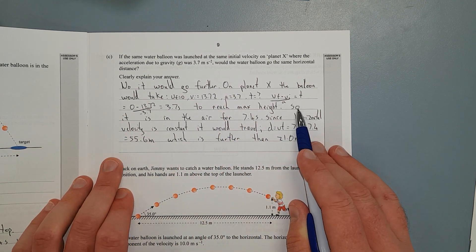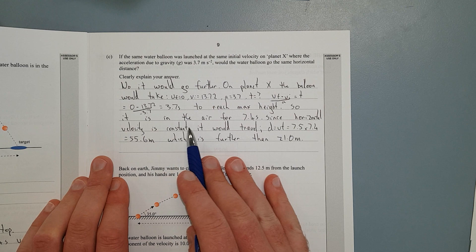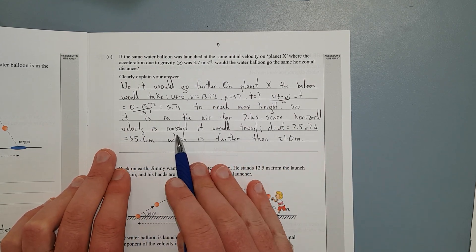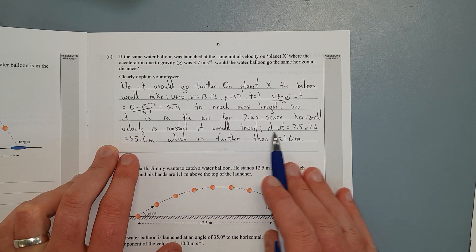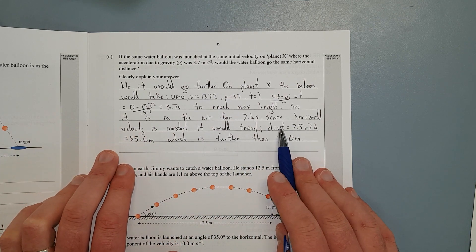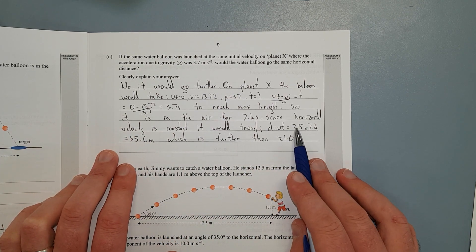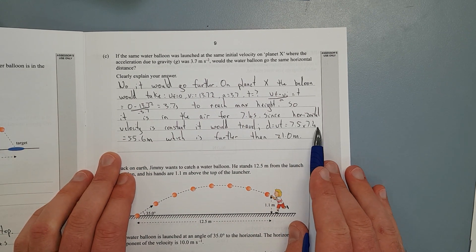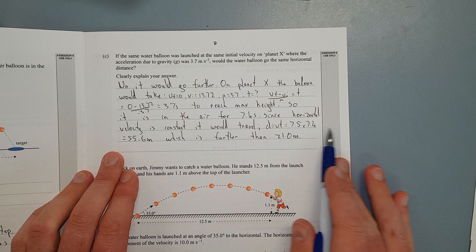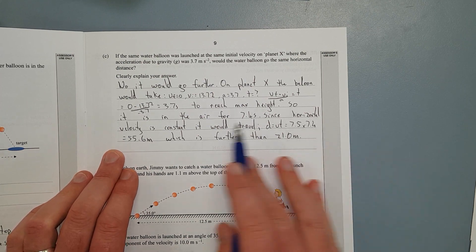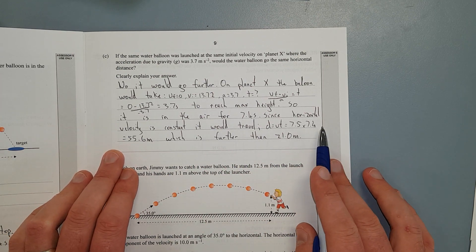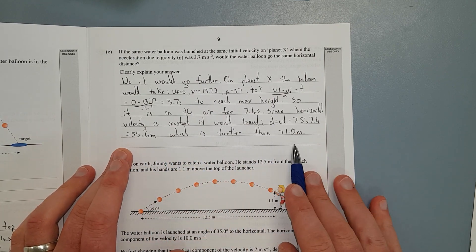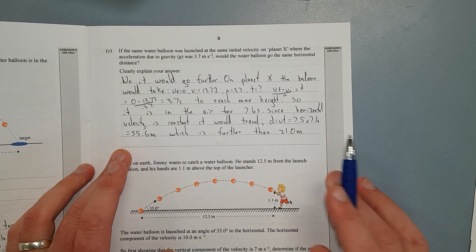So it is in the air for 7.4 seconds. Since the horizontal velocity is constant, it would travel, and I'll just write distance is velocity times time. So horizontal distance, 7.5 times 7.4, and there's no acceleration in the horizontal directions. We don't have to worry about that. That'll give you 55.6 metres, which is further than 21. We answer the question.